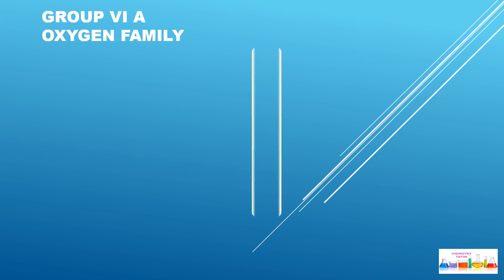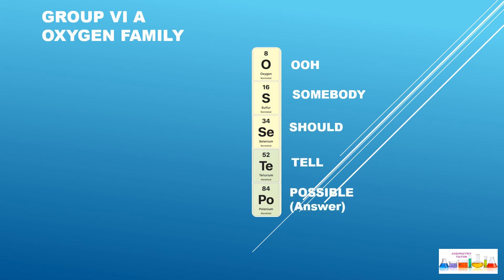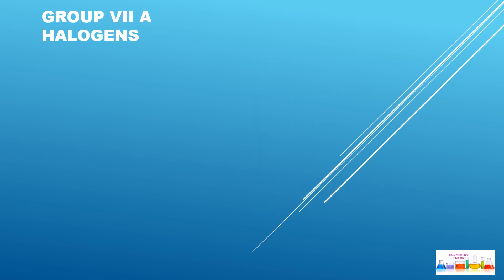Group 6A: Oxygen family. We need to learn the phrase: 'Oh Somebody Should Tell Possible.' O is for Oxygen, Somebody is for Sulfur, Should is for Selenium, Tell is for Tellurium, and Possible is for Polonium.